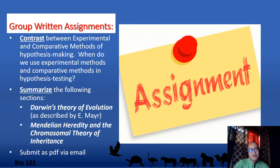As a supplementary activity for this module, please submit a written essay about the following related topics in Chapter 1: contrast between experimental and comparative methods of hypothesis testing — when do we use experimental methods and when do we use comparative methods? Also summarize Darwin's theory of evolution as described by Ernst Mayr, and the Mendelian heredity and chromosomal theory of inheritance.